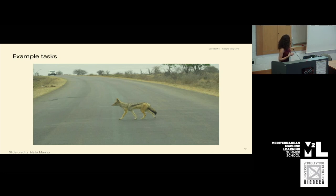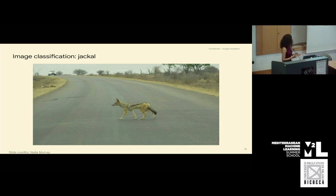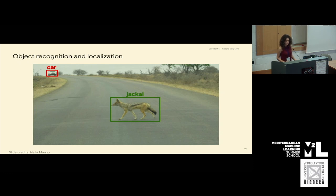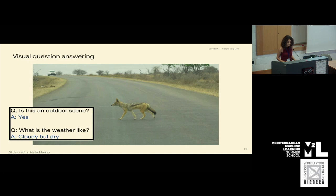I will introduce some example tasks in the field of computer vision. Given an image, image classification asks what would be the category of the image — in this case it could be a jackal. Object recognition and localization means finding which objects there are — jackal and car — and also localizing them. In computer vision, localization is often denoted through bounding boxes.